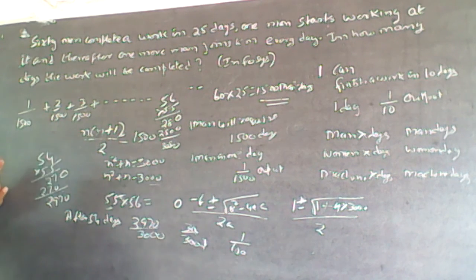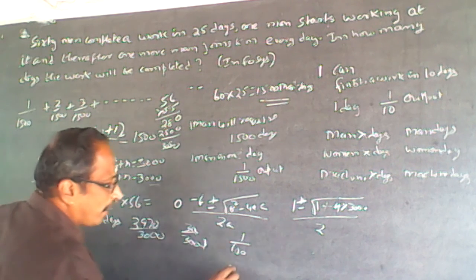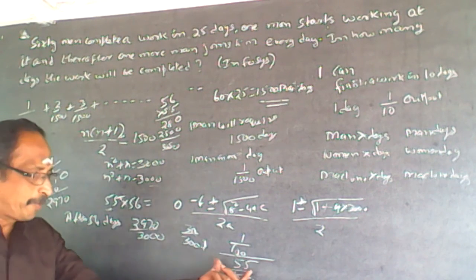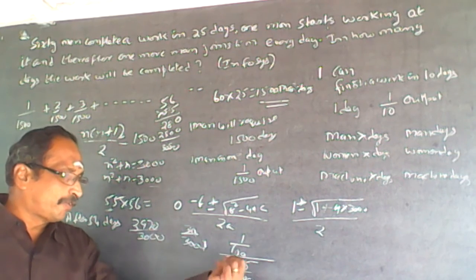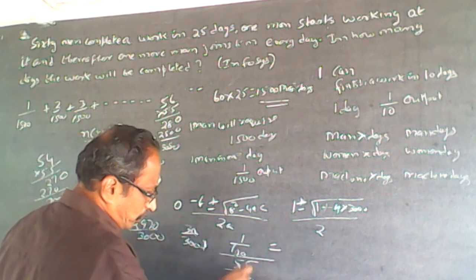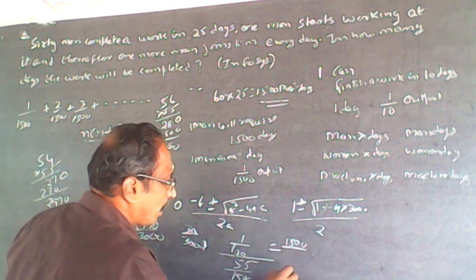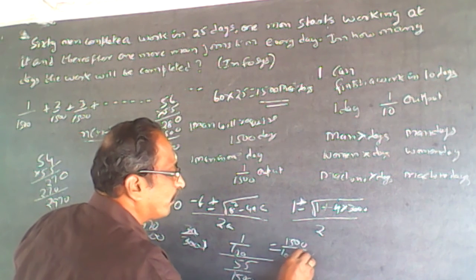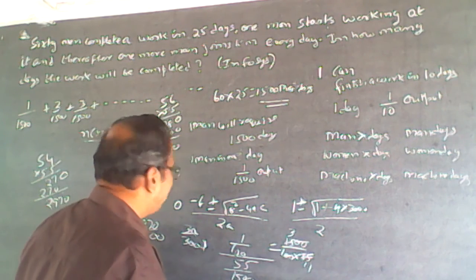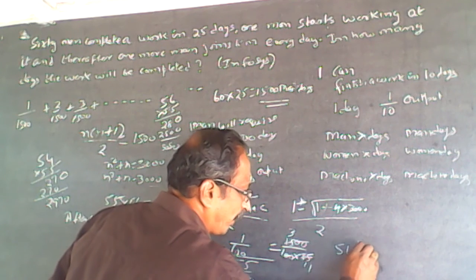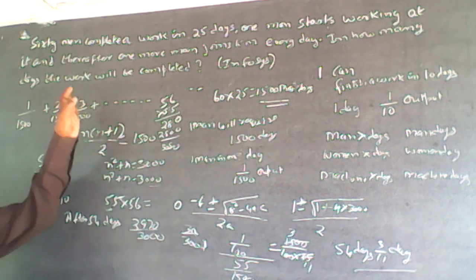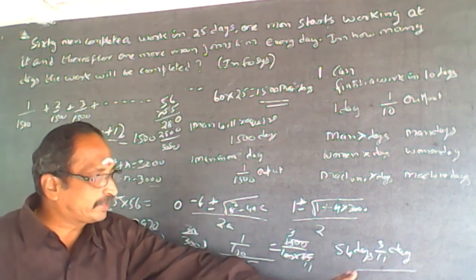This remaining 1/100 has to be done on the 55th day. The rate on the 55th day is 55/1500. So the fraction of the 55th day needed is (1/100) ÷ (55/1500) = 1500/(100 × 55) = 15/55 = 3/11. The answer is 54 and 3/11 days.